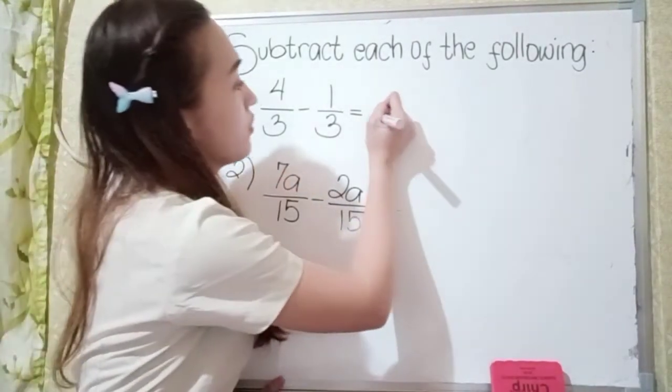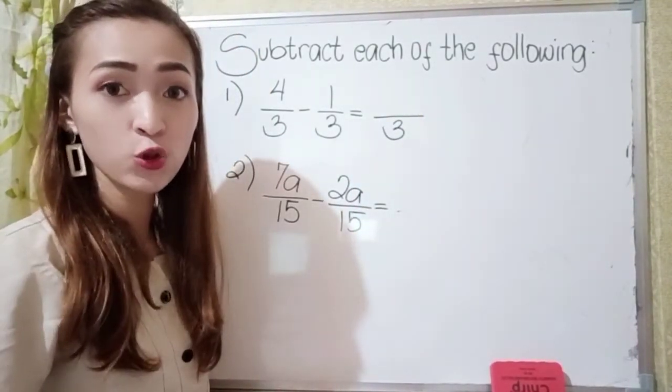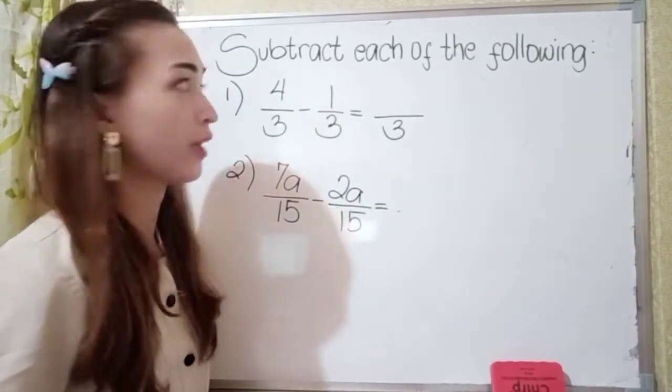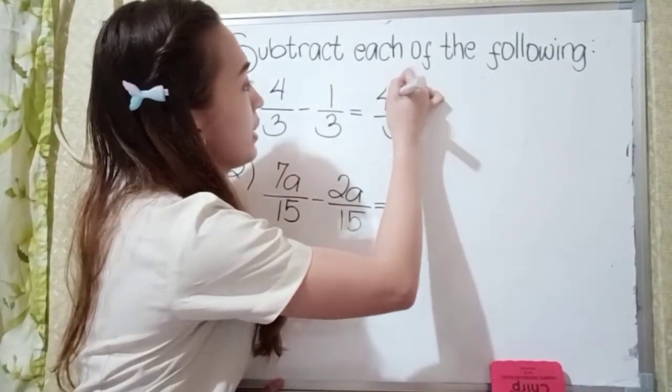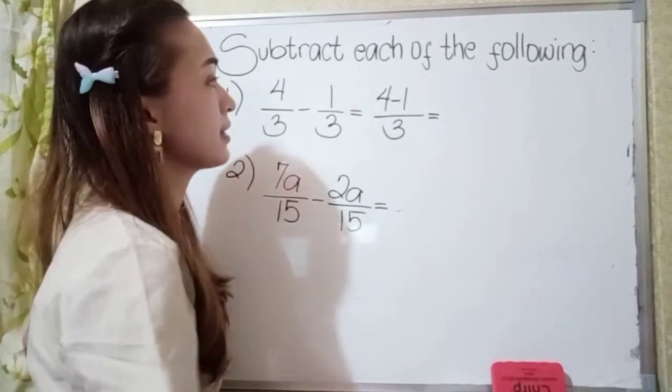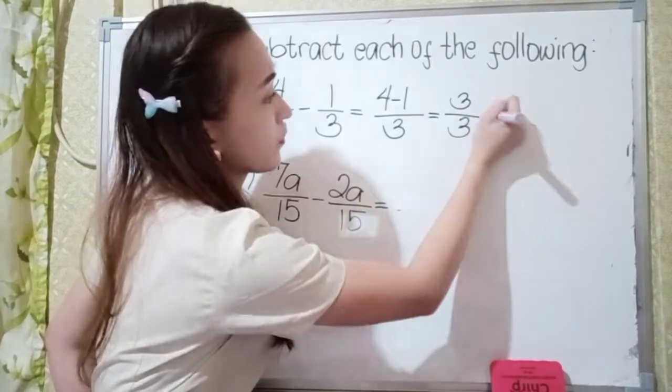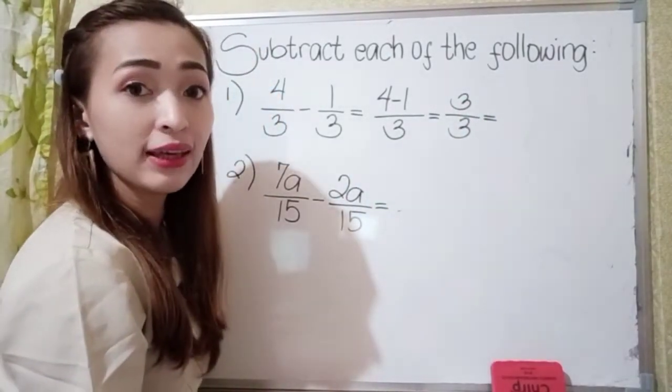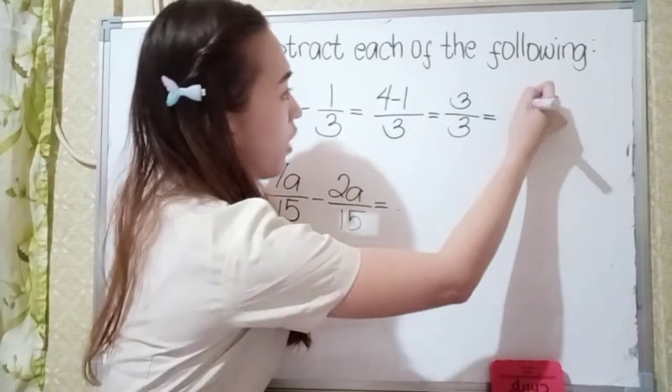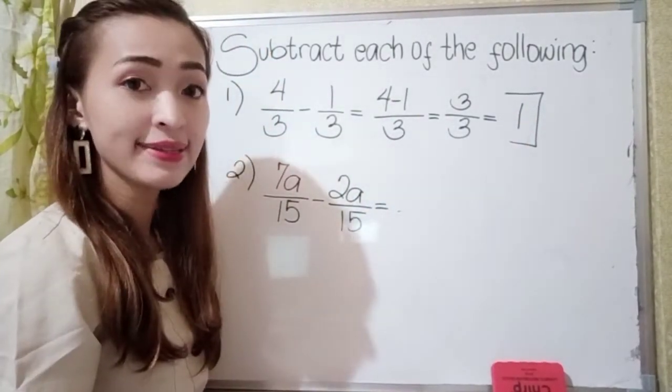So what we're going to do is just copy the denominator 3. Next is to subtract the numerator, so 4 minus 1. Alright, so next is 4 minus 1 is 3 over 3. Now we can simplify 3 over 3 by 1. So the answer in number 1 is 1.